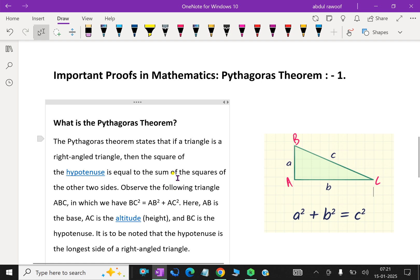It is to be noted that the hypotenuse is the longest side of the right-angled triangle.